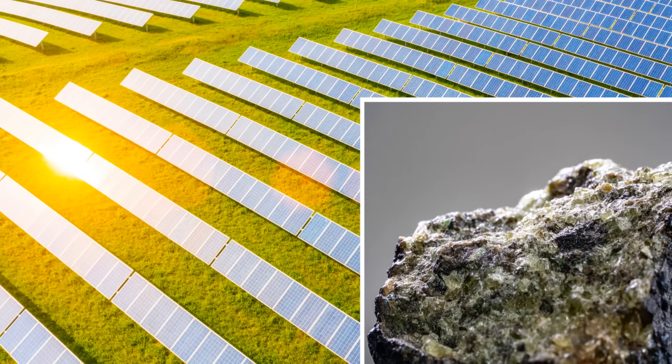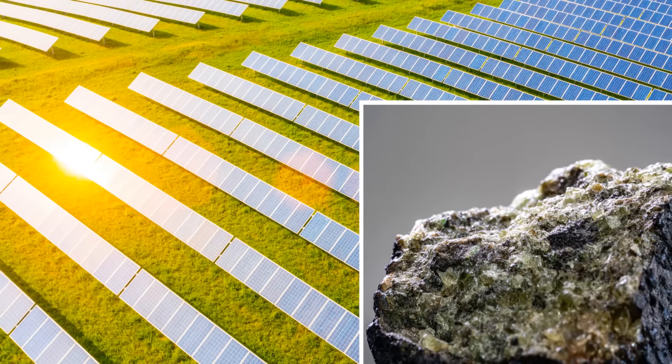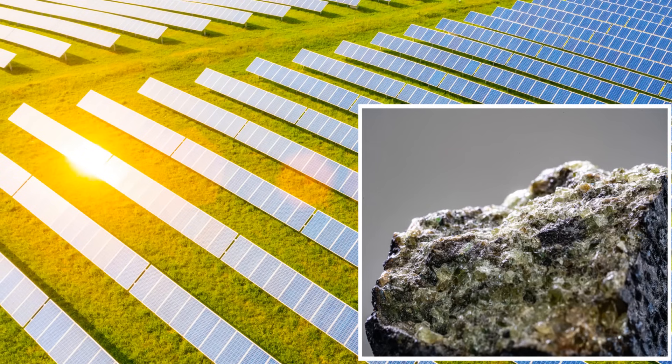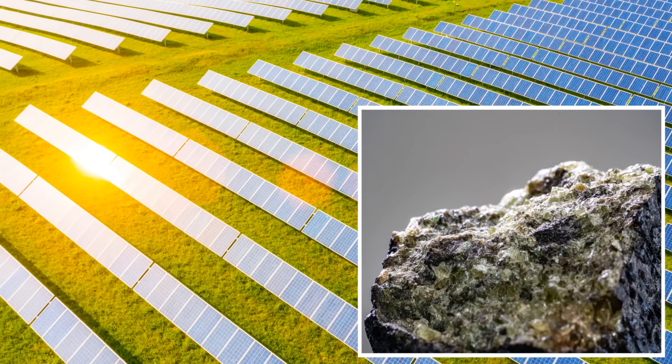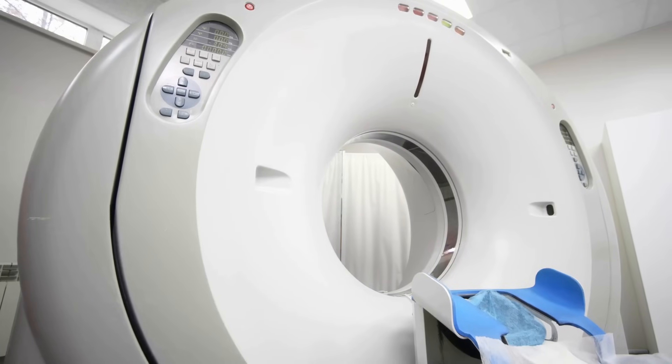When light particles, called photons, hit the atoms in the solar panel, they can knock electrons loose. The panel is cleverly designed to collect all these loose electrons and guide them into a wire, creating an electrical current. Our knowledge of atoms has had a huge impact on medicine, helping doctors see inside our bodies and treat diseases in ways that were once impossible.